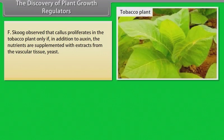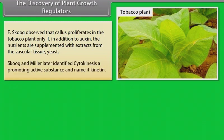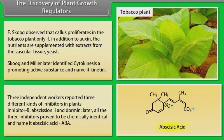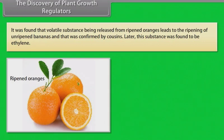F. Skoog observed that callus proliferates in the tobacco plant only if, in addition to auxin, the nutrients are supplemented with extracts from the vascular tissue, yeast. Skoog and Miller later identified cytokinin, a promoting active substance and named it kinetin. Three independent workers reported three different kinds of inhibitors in plants: inhibitor B, abscission 2 and dormin. Later, all the three inhibitors proved to be chemically identical and named it abscisic acid, ABA. It was found that volatile substance being released from ripened oranges leads to the ripening of unripened bananas and that was confirmed by Cousins. Later, this substance was found to be ethylene.